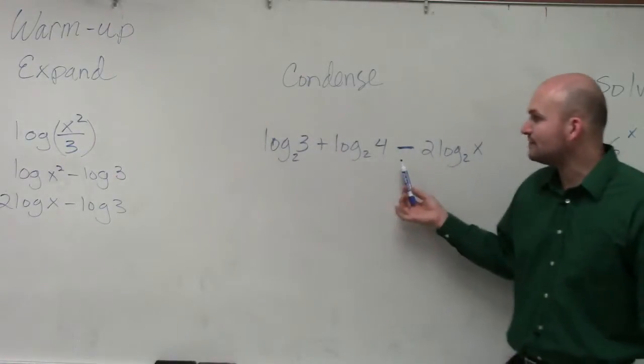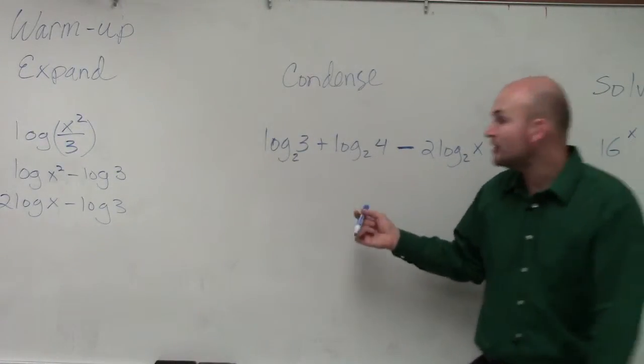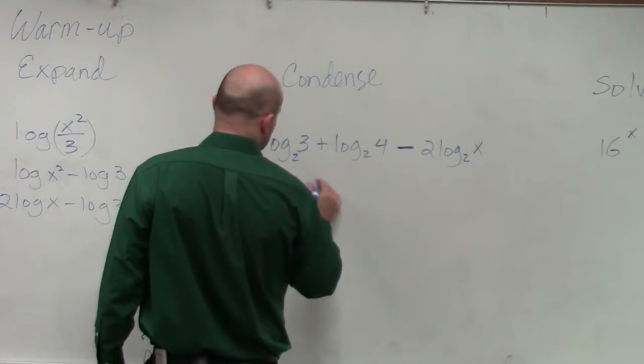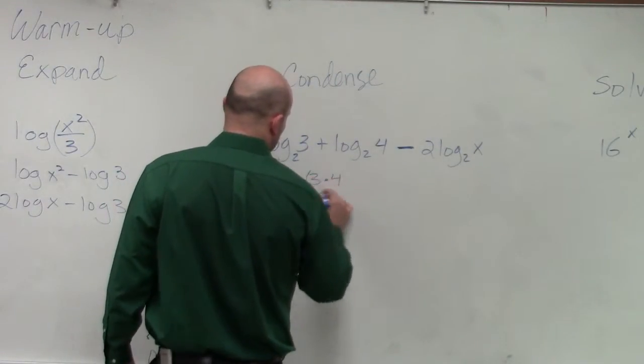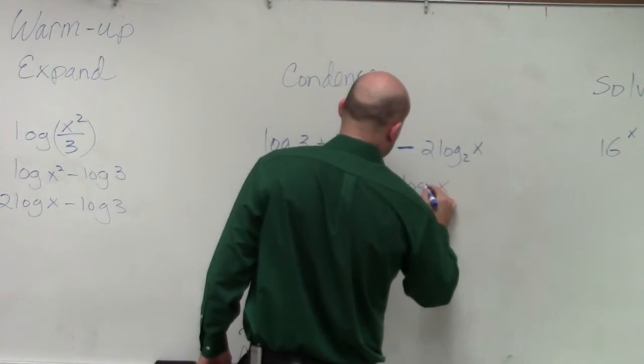So if I'm going to go from left to right, you guys can see that these two are separated by addition. So therefore, I can rewrite this as log base 2 of 3 times 4 minus 2 log base 2 of x.